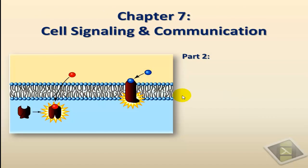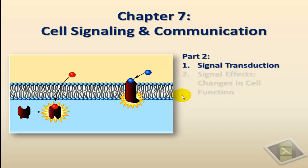In the first part, we talked about the types of chemical molecules that we have. We talked about three types: autocrine, paracrine, and endocrine. Then we talked about receptors and their classification under two categories: cytoplasmic and membrane receptors. In part two, we will talk about signal transduction and what it means and how it can lead to a cellular response, the final effect on the cell.